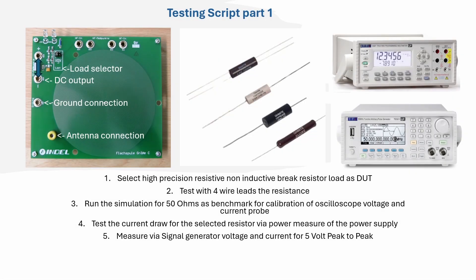On the testing script part one, you see on the left side the pancake coil, which is commercially available. You have the different lead outs and different connectivities and load selectors as defined. We're going to have everything switched off from the load selector and we use our own resistor.